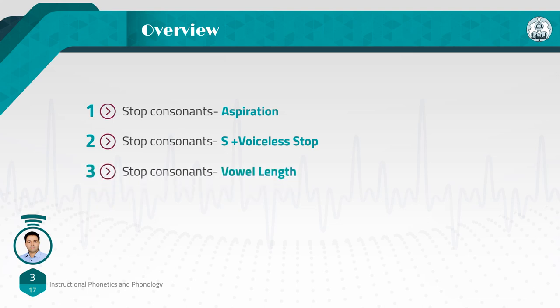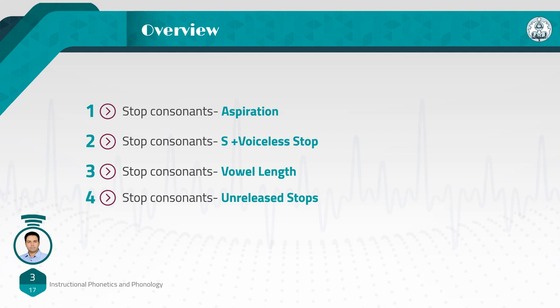Number three is about the length of vowels. We said that a vowel is much shorter before voiceless consonants than before voiced consonants — this was the major difference. Number four is unreleased stops. Sometimes we pronounce a word like 'tap' with release, and sometimes without. For example, when we say 'take a cap' versus 'take a cap now,' or 'the cat' versus 'the cat pushed,' the final consonant can be released or unreleased.